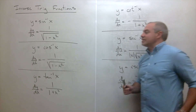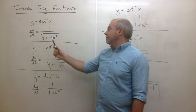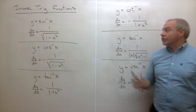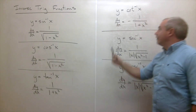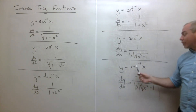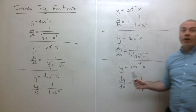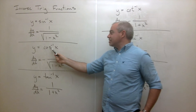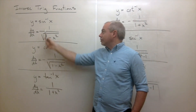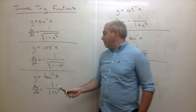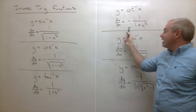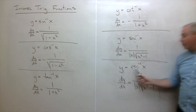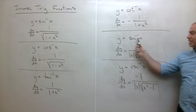Something cool to notice: the derivatives of sine inverse, tangent inverse, and secant inverse are all positive. The derivatives of cosine inverse, cotangent inverse, and cosecant inverse are all negative — and they are the negatives of the function they are the 'co' of. Cosecant's derivative is negative the derivative of sine inverse; cotangent's derivative is negative the derivative of inverse tangent; and the derivative of cosecant inverse is the negative of the derivative of secant inverse.